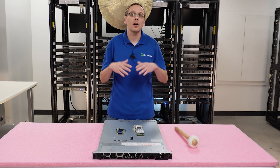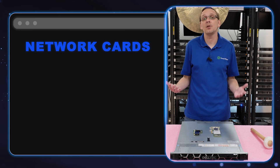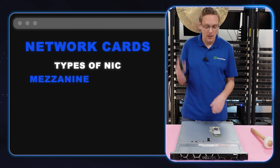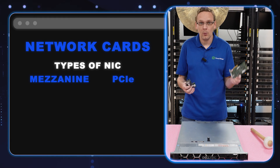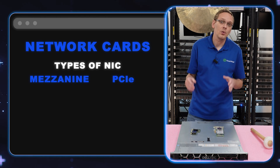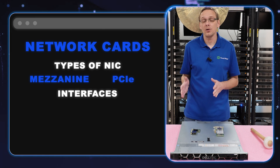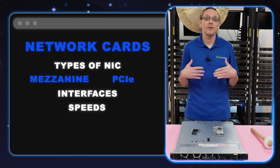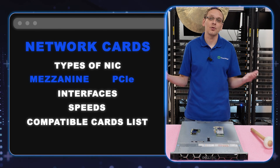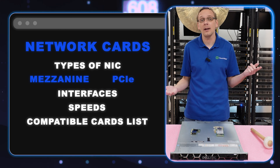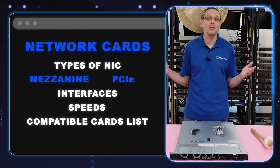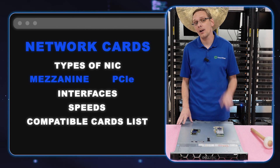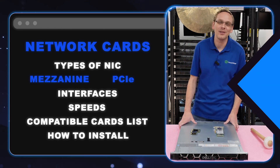What we're going to do in this video is talk about the two different types of network cards that you can use, which are the mezzanine card and a PCIe card. We're going to show you a bit more about that shortly. We're going to talk about the different interfaces, the different speeds, and then put up a list at the very end of compatible cards. If you have a card you like, drop a comment below and let the other users know. Then we're actually going to install both types of cards. Let's hop into the good stuff.